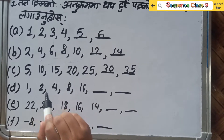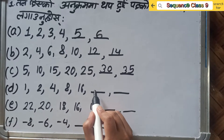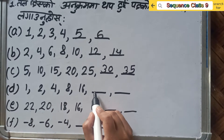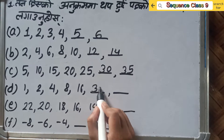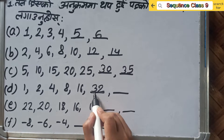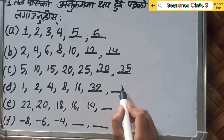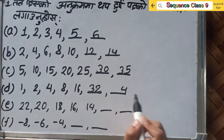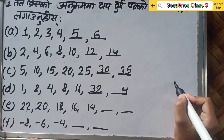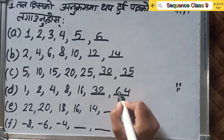Starting again: 1, 2, 4, 8, 16. Then continuing: 16, 32, 32, 32, 64.